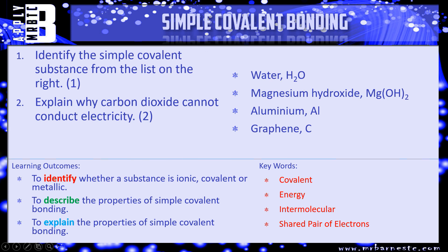Let's see what the examiner can ask you. Question one: identify the simple covalent substance from the list — water, magnesium hydroxide, aluminium, and graphene. Which one only contains non-metals and only has a few atoms involved? That's your simple covalent. Question two: explain why carbon dioxide cannot conduct electricity. Have a go — we'll see how you've done in a minute.